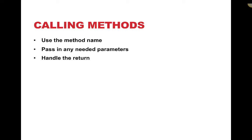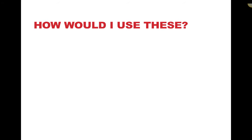Whenever I'm ready to call methods, I have three key things to plan for: I have to know the method name, know if I have any parameters to pass in, and know how I'm going to handle the return. Looking at an example — public String getBook(String ISBN) — I know a string will be returned, the method's name is getBook, and I need to pass a string treated as the ISBN inside the method. This method might take the string passed in as the ISBN, look it up in a database, grab the string for the book name, and store that into a string to be returned when the method is done running.